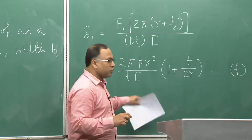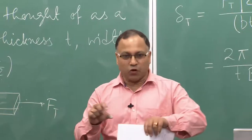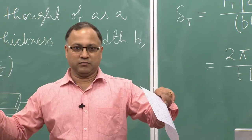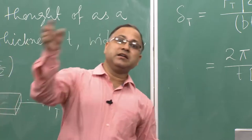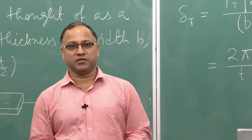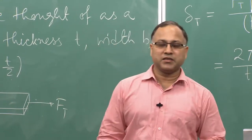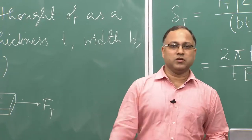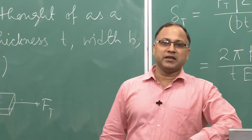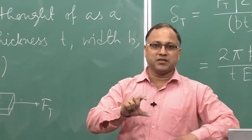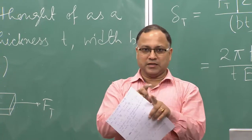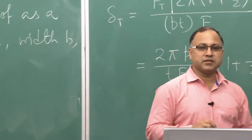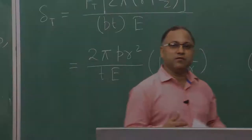We now need to convert this axial elongation delta-t into the radial expansion of the hoop. That will be done in the next class, where we will see how the hoop expands radially due to the internal pressure. Thank you very much.